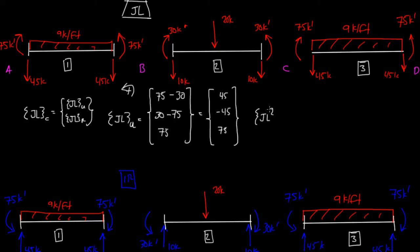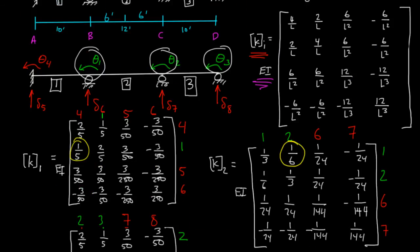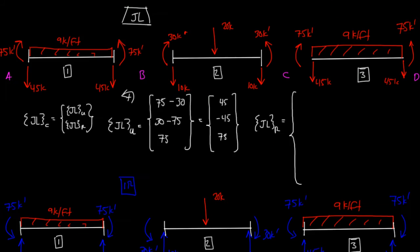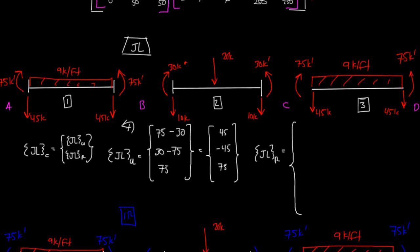Our joint load restrained is all the joint loads happening at the restrained degrees of freedom. Our restrained degrees of freedom — I'm going to circle them in yellow — is this rotational one here at 4, a vertical one here at 5, 6, 7, 8. So our fourth degree of freedom was here at A, and this is a negative 75. Then we do number 5, which was also at A, and since it was going down and our positive sign convention is up, the 45 is going down, so this is a negative 45.